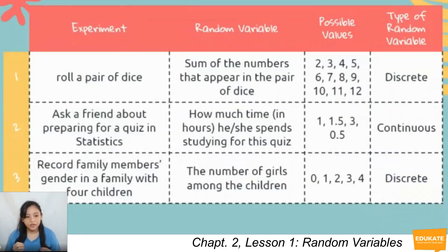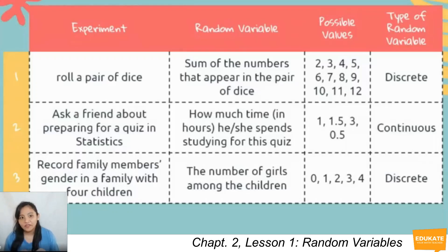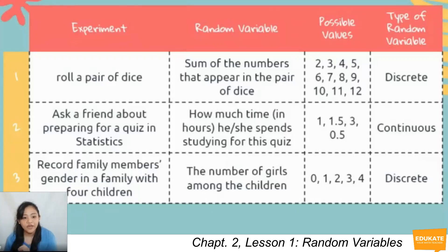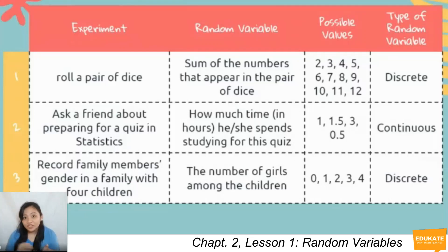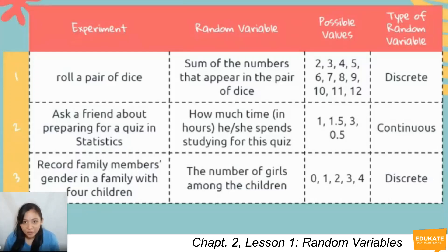The variables a continuous random variable can have lie on a continuum, meaning an interval. Looking at examples in a table with experiment, random variable, possible values, and type: for experiment one — rolling a pair of dice — the random variable is the sum of the numbers that appear. The possible values are 2, 3, 4, 5, 6, 7, 8, 9, 10, 11, 12, since die faces are 1 through 6. Since we can list all possible outcomes, the type of random variable is discrete.